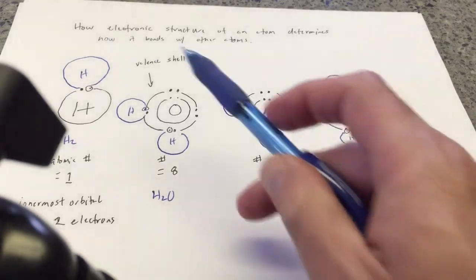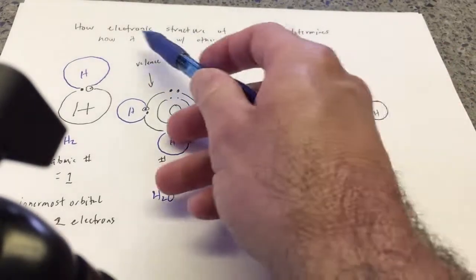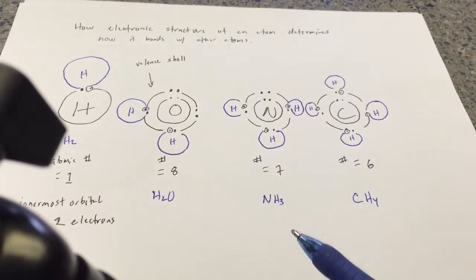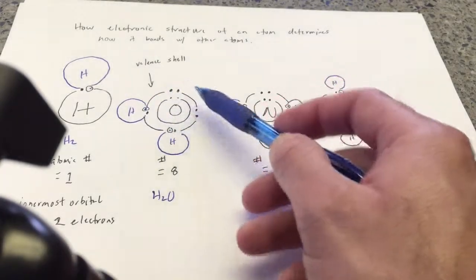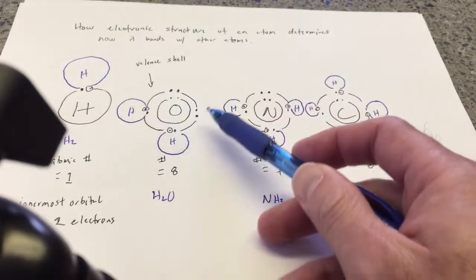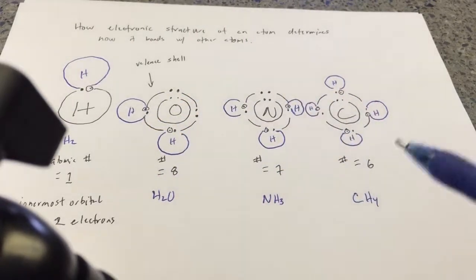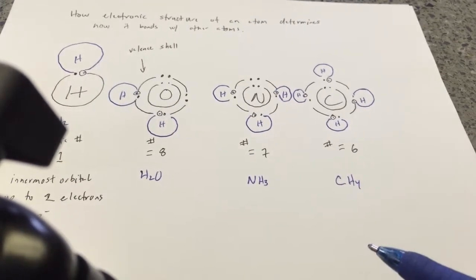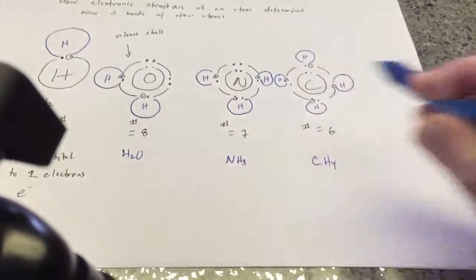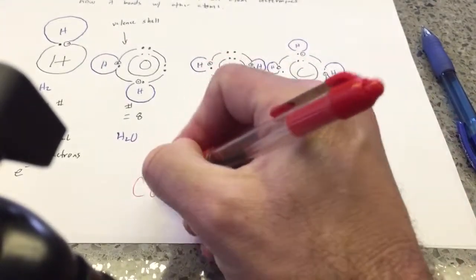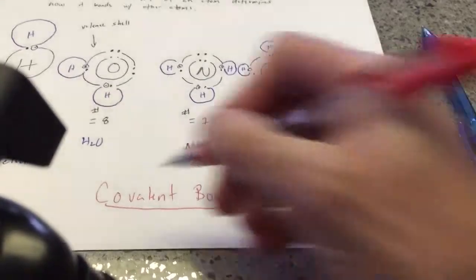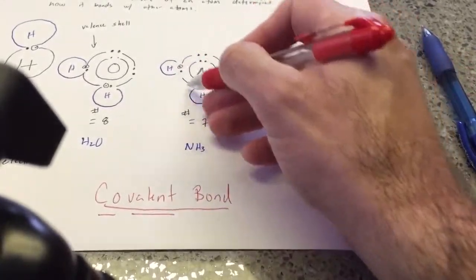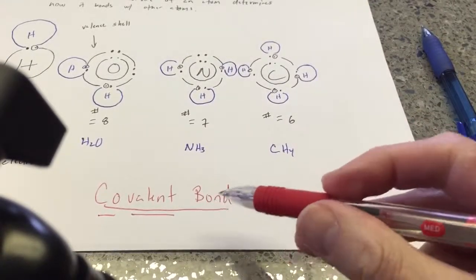But here, we can see how the electronic structure of an atom determines how it bonds with other atoms. Up to how many bonds can carbon make? Four. Up to how many bonds can nitrogen make? Three. Oxygen? Two. Hydrogen? Just one. And it has everything to do with how many unpaired electrons there are in this outer shell called the valence shell. Okay? And very shortly in the lecture, we're going to learn that when atoms share electrons, this kind of bond is called a covalent bond. Co meaning sharing, valence meaning they're sharing that outer valence shell. And it's one of the strongest bonds that exists.